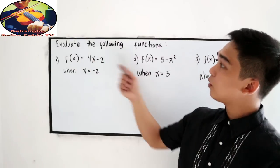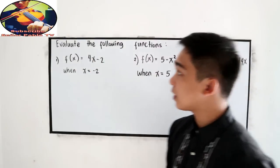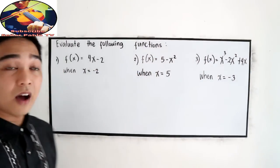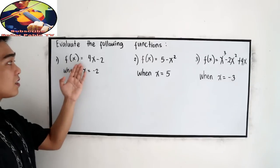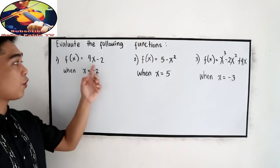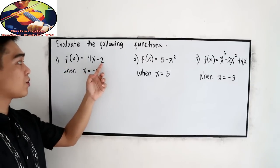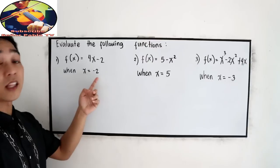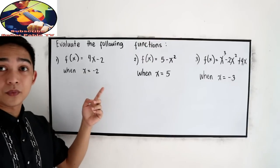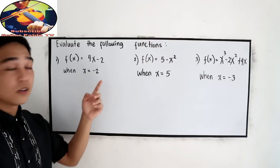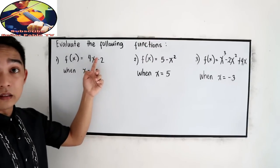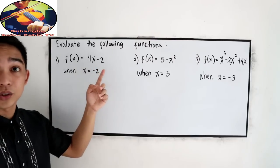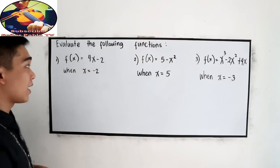Number 1: evaluate the following functions. We have f of x is equal to 4x minus 2, when x is equal to negative 2. So our degree is 1 — this is a linear function. So let us evaluate.